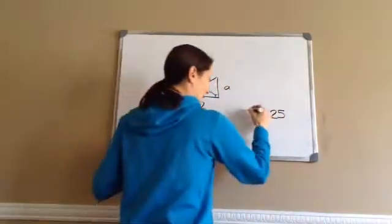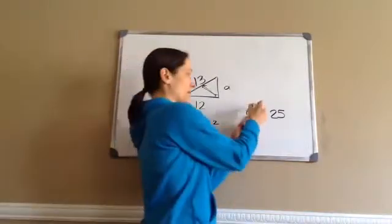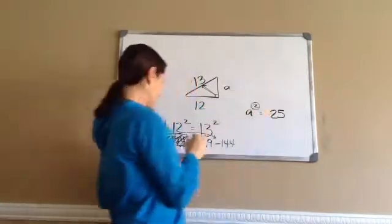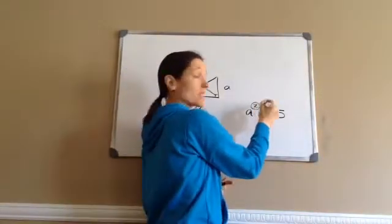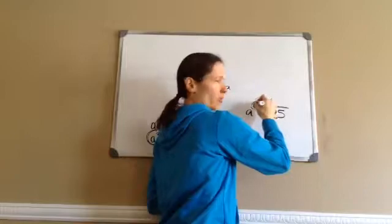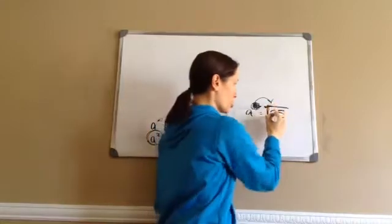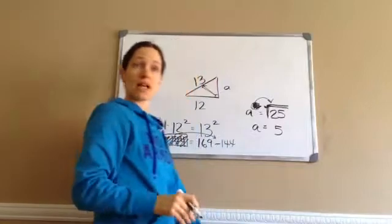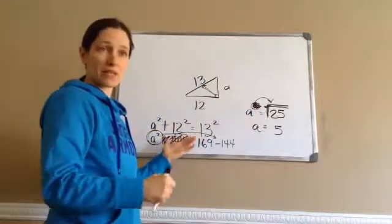Now, a squared equals 25 — how do I get a by itself? The opposite of squaring is square rooting. Just like the opposite of plus 144 is minus 144, when I move the square across the equals sign it becomes a square root. So a equals the square root of 25, and the square root of 25 is 5. So whether you're finding a, b, or c, you can always use the Pythagorean theorem to get the answer.